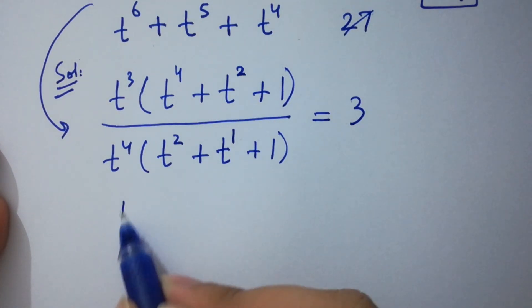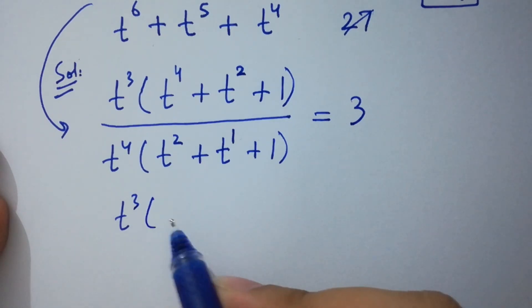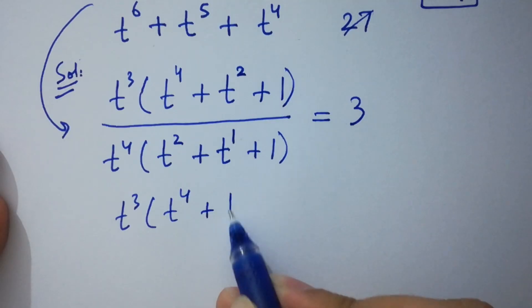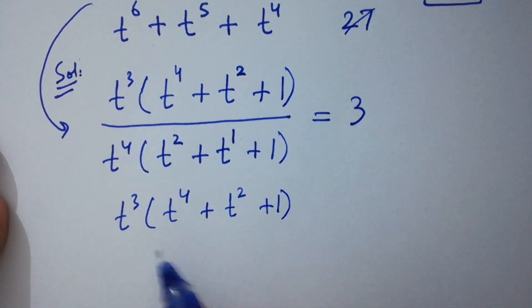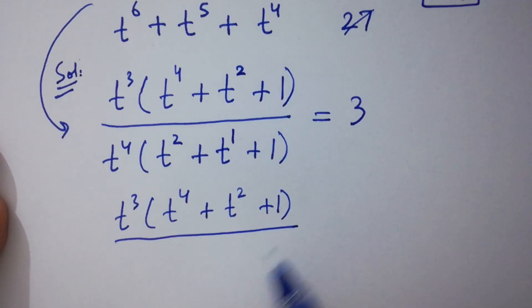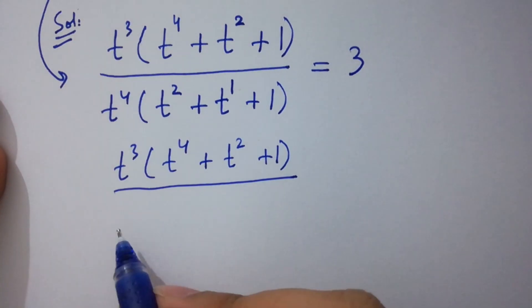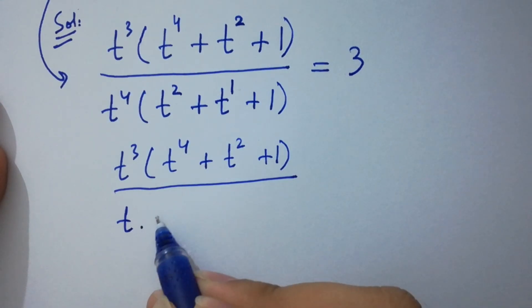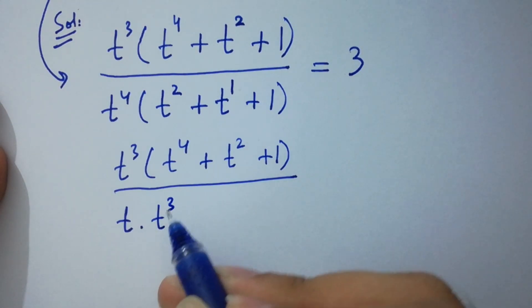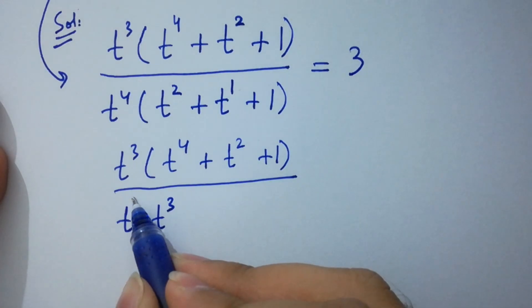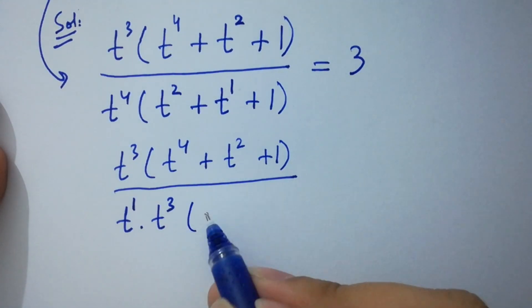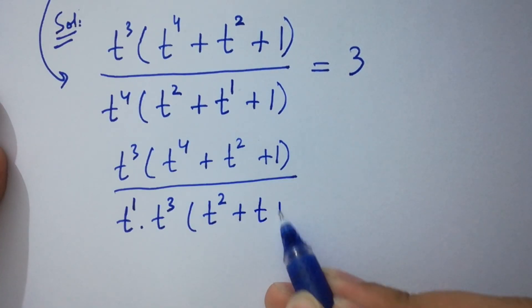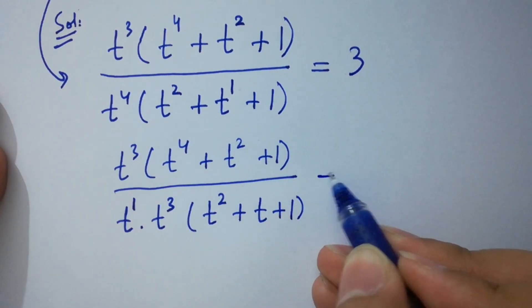Simplify this: t³ times (t⁴ + t² + 1) over t⁴, where t⁴ can be written as t times t³, times (t² + t + 1) equals 3.